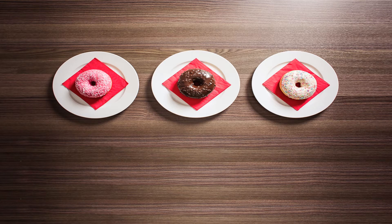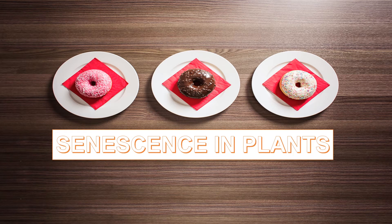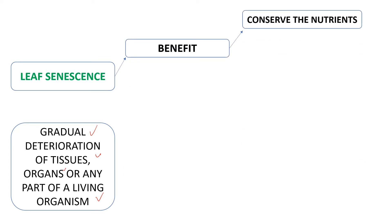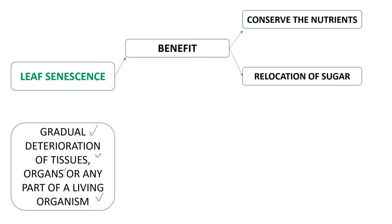Welcome to the plant well microbiology course. Today we shall discuss a very important topic: senescence in plants and their molecular mechanisms. Leaf senescence can be defined as the gradual deterioration of tissues, organs, or any part of a living organism. One benefit of leaf senescence is the conservation of nutrients — when leaves are shed, nutrients within them are relocated to the reproductive seeds and other parts of the plant.